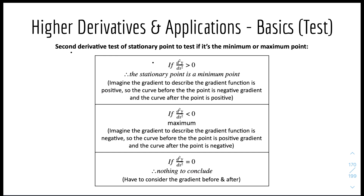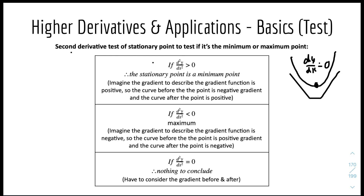If d²y/dx² is greater than zero, it means that the stationary point is a minimum point. The gradient function describing the gradient is positive — the curve before the point has a negative gradient and the curve after the point has a positive gradient. So for a quadratic graph, the minimum point is where dy/dx equals zero, and since the overall gradient is increasing, it is a minimum point when the second derivative is greater than zero.